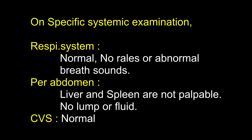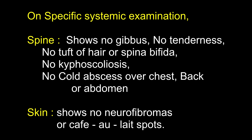There are no signs of meningeal irritation — no neck stiffness, Kernig's and Brudzinski's signs are absent, and the straight leg raising test is negative. On specific systemic examination, the respiratory system is normal with no rales or abnormal breath sounds. Abdomen: liver and spleen are not palpable, no lump or fluid. Spine shows no gibbus, no tenderness, no tuft of hair or spina bifida, no kyphoscoliosis, no cold abscess over the chest, back, or abdomen. Cardiovascular system is normal. Skin shows no neurocutaneous markers — no neurofibromas or café-au-lait spots. There is no thickening of the nerves. Which neurocutaneous markers do you know of? Café-au-lait spots, multiple neurofibromatosis, port wine stains on the face in Sturge-Weber syndrome, telangiectasia, and tuberous sclerosis. And what do thickened nerves suggest? Leprosy, diabetes, amyloidosis, and CMT syndrome.